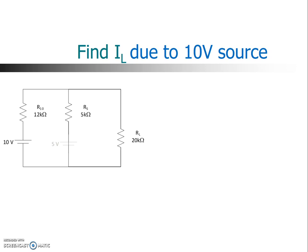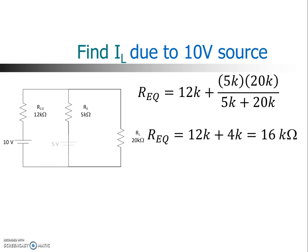And we're interested in the current in the 20K. So first we have to find the equivalent resistance that the 10-volt source sees. So that would be 12K added to the parallel combination of 5K and 20K. So product over sum, since it's only two branches. The equivalent resistance for the 10-volt source turns out to be 16,000 ohms. We can use that 16,000 ohms to find the total current from the 10-volt source. That's simply Ohm's law. 10 volts divided by 16K gives us 0.625 milliamps.